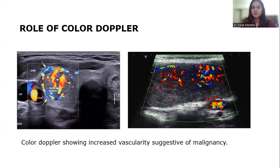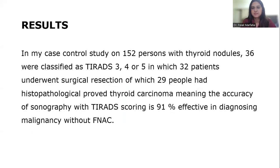Role of Color Doppler. The Doppler shows increased vascularity, which is suggestive of malignancy. Results. In my case-control study on 152 people with thyroid nodules, 36 were classified as TIRADS 3, 4, or 5, in which 32 patients underwent surgical resection, of which 29 had HPE-confirmed thyroid carcinoma, meaning the accuracy of sonography with TIRADS scoring is 91% effective in diagnosing malignancy without FNAC.